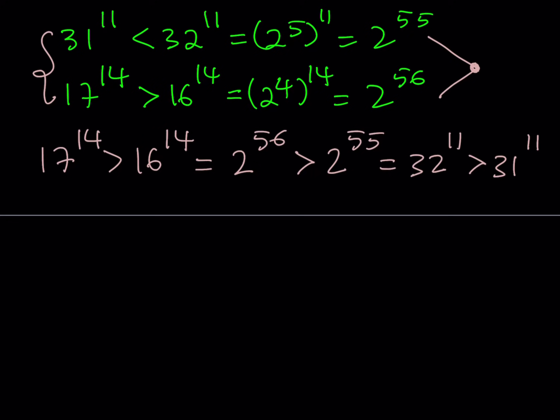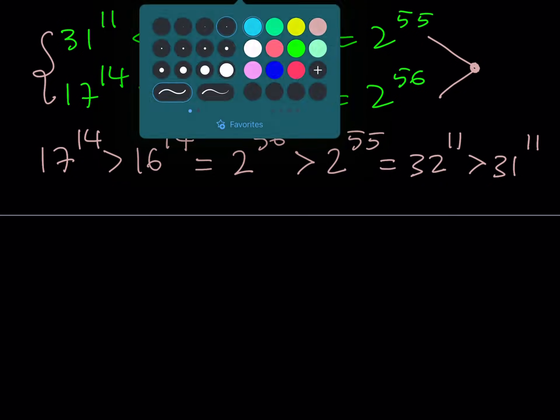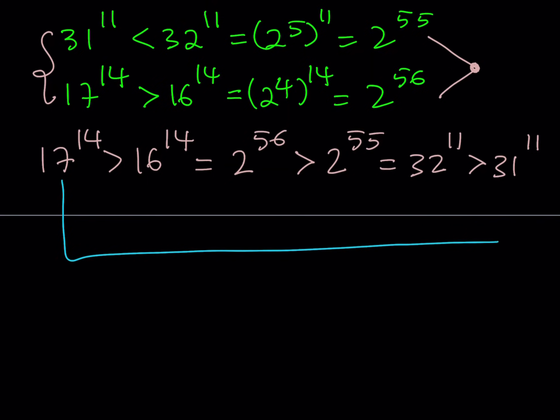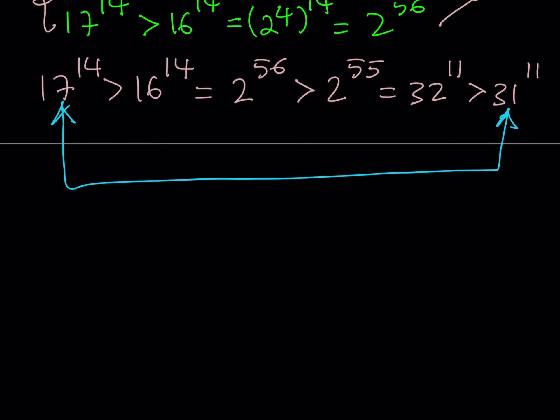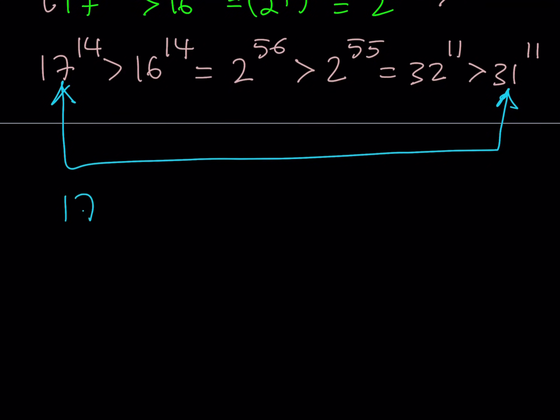So by using powers of 2 in the middle, we're able to compare 17, a power of 17 and a power of 31. Now what is this supposed to mean? It means that we can forget about everything in the middle and write this as this number being greater than that number. Using the transitive property, we can safely say that 17 to the 14th power is greater than 31 to the 11th power.